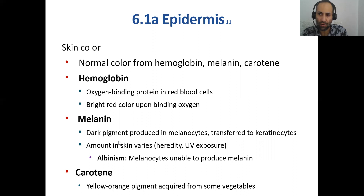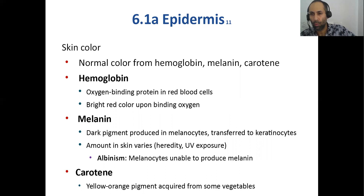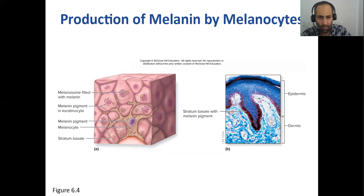Carotene is a yellowish-orange pigment derived from vegetables that are yellowish-orange, like carrots and squash. Carotene tends to accumulate in your skin layers, giving a yellowish-red coloration. Here you can see your melanocytes producing this dark melanin.